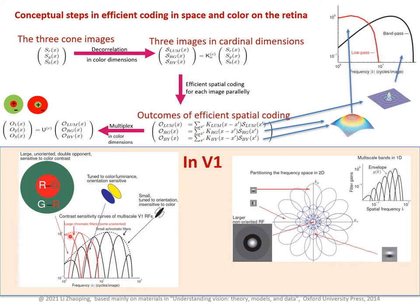It could be a high-frequency band, low-frequency band, intermediate-frequency band, or a band tuned to a specific orientation, or even a band untuned to orientation. Then within any single band, we can find the filters for luminance and chromatic channels before we multiplex them in the three-dimensional cone space to arrive at the final encoded outputs. We will find a diversity of filters, including orientation-untuned double opponent cells sensitive to colour, orientation-tuned filters not sensitive to colour, or filters tuned to both orientation and colour.